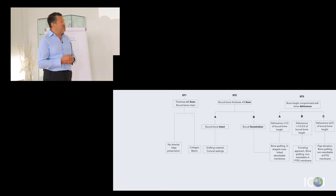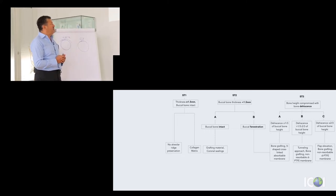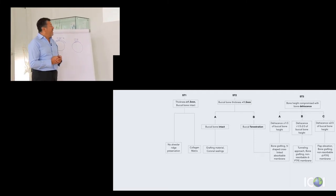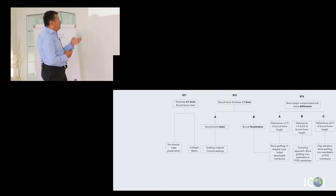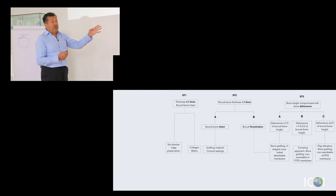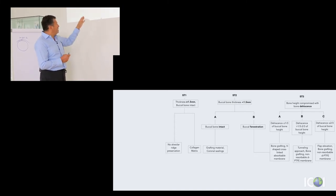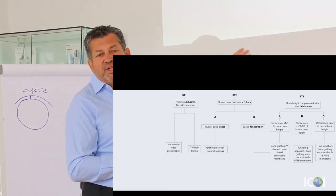Looking at the decision tree: if bone thickness is more than 1.5 to 2 millimeters, no alveolar ridge preservation is necessary, though we can place a collagen matrix to maintain the blood clot. However, if bone thickness is less than 1.5 millimeters, we need to take action — we have to put something in the socket. If the buccal bone is intact, we will place some grafting material and a coronal sealing, which can be a collagen matrix. If we have a fenestration, a membrane will be necessary.